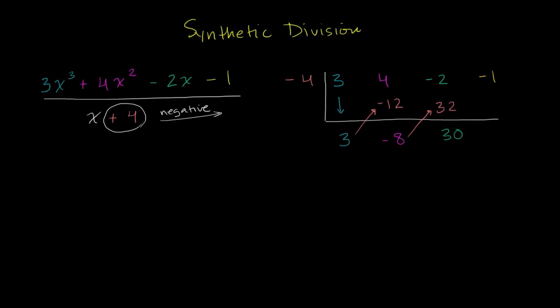Then you multiply the positive 30 times the negative 4. And that gives you negative 120. And then you add the negative 1 plus the negative 120. And you end up with a negative 121.